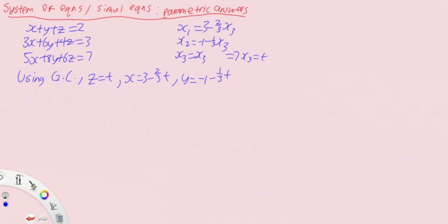Therefore, if t is any real number, x equals 3 minus 2 over 3t will also be almost every real number, y equals minus 1 minus 1 over 3 times t will also be any real number. So it actually depends on the parameter that you put in. So if z equals, let's say, 5, x equals 3 minus 10 over 3, y equals minus 1 minus 5 over 3, and so on and so forth.